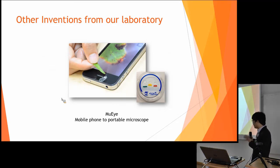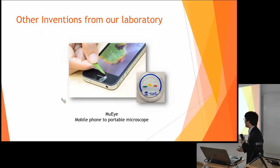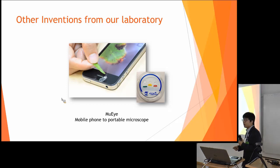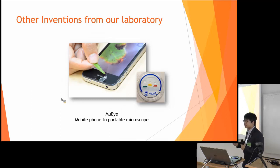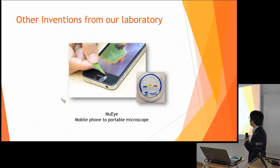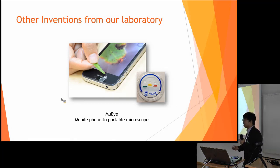Our portable microscope is a mobile phone-to-portable-microscope converter. In Thailand, there are rural areas where students don't have a chance to access a microscope. So we developed a polymer lens that can turn your mobile phone into a portable microscope — you can take pictures and share them with everyone. We currently have three magnification levels: 25x, 50x, and 100x.